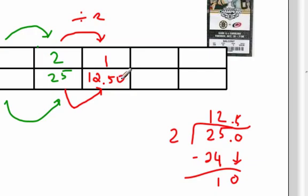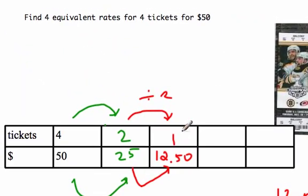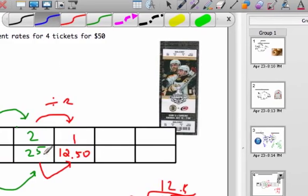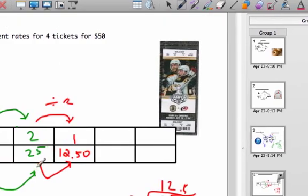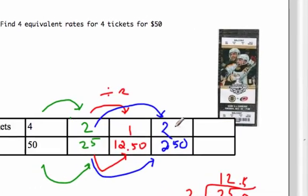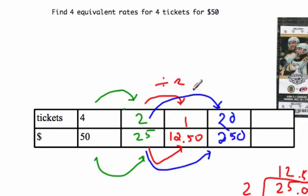We've got two equivalent rates and we've done all the dividing we can. Now for multiplying — I'll use the two tickets for twenty-five dollars rate and multiply by ten, since ten is simple to do in your head. That gives two hundred fifty dollars. Make sure you multiply the tickets too: two times ten equals twenty tickets. So twenty tickets for two hundred fifty dollars is a third equivalent rate.